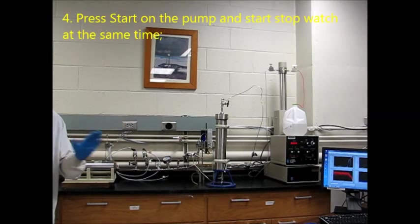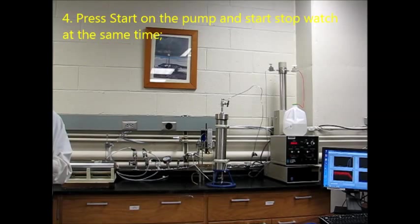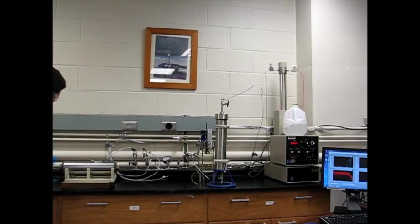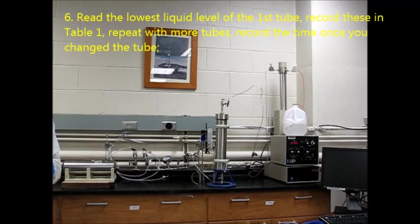And then, press start at the pump, and start a stopwatch to set the time, so we can see the timing of the flow rate at the outlet here. Read the lowest liquid level of the tube and record this in table number 1 that we have in the manual. Repeat with more tubes and record the time once you change the tube by using the stopwatch.